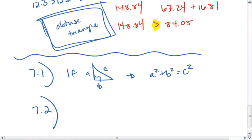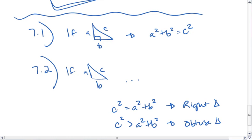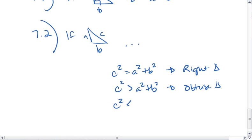7.2 told us that if we have a triangle where our longest side is C, and if C squared is equal to A squared plus B squared, then we have a right triangle. If C squared is greater than A squared plus B squared, we have an obtuse triangle. And if C squared is less than A squared plus B squared, we have an acute triangle.